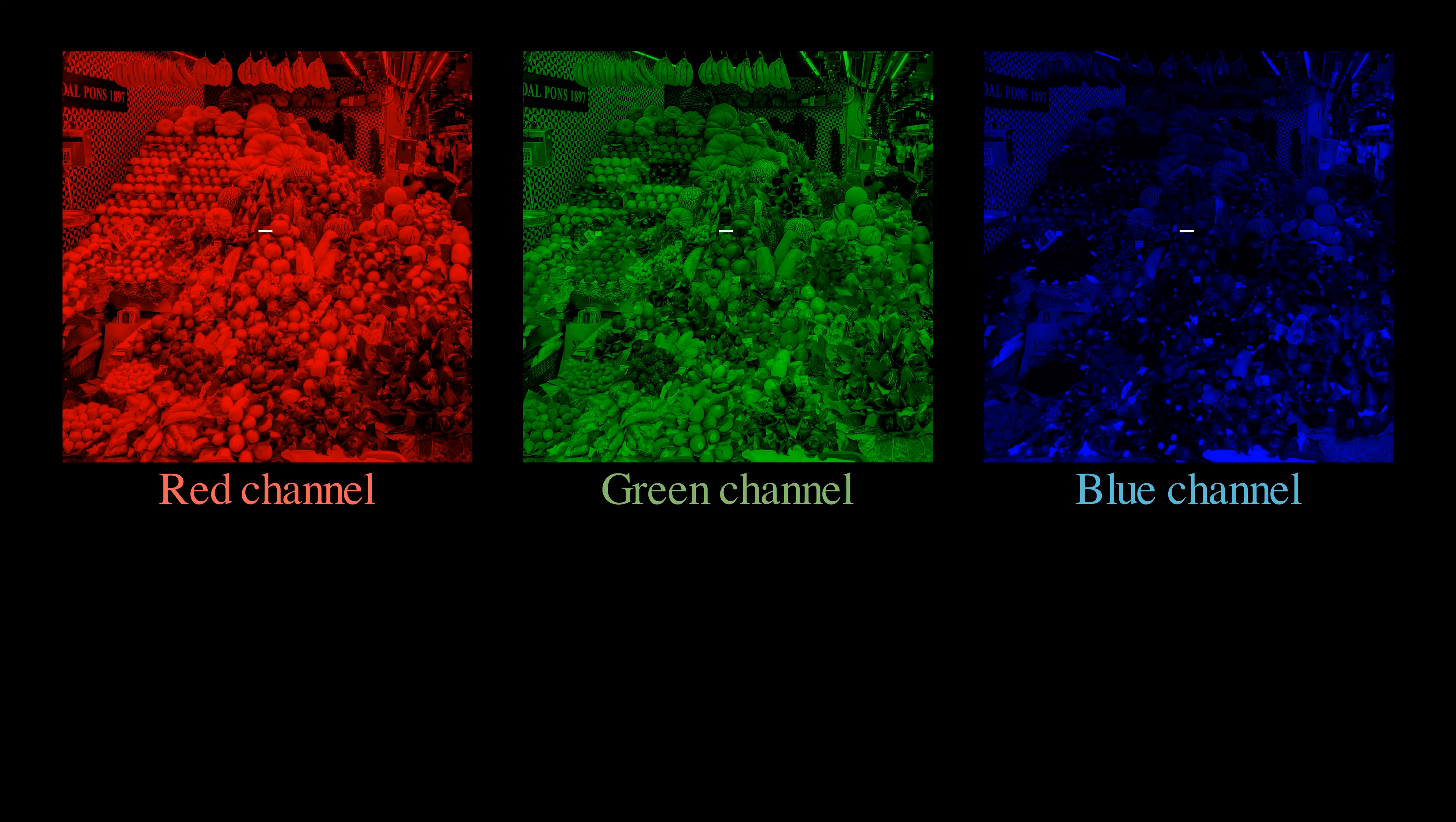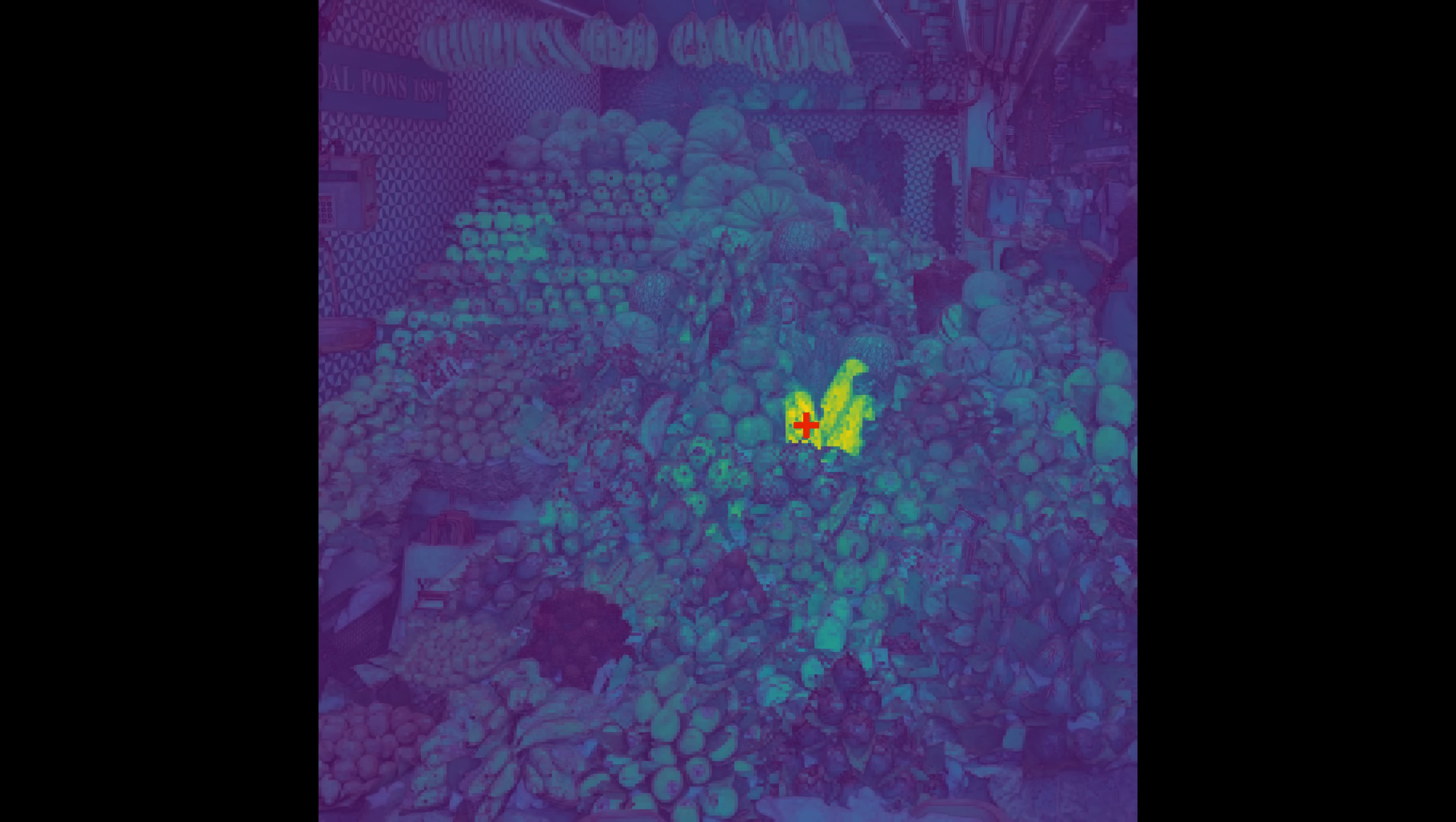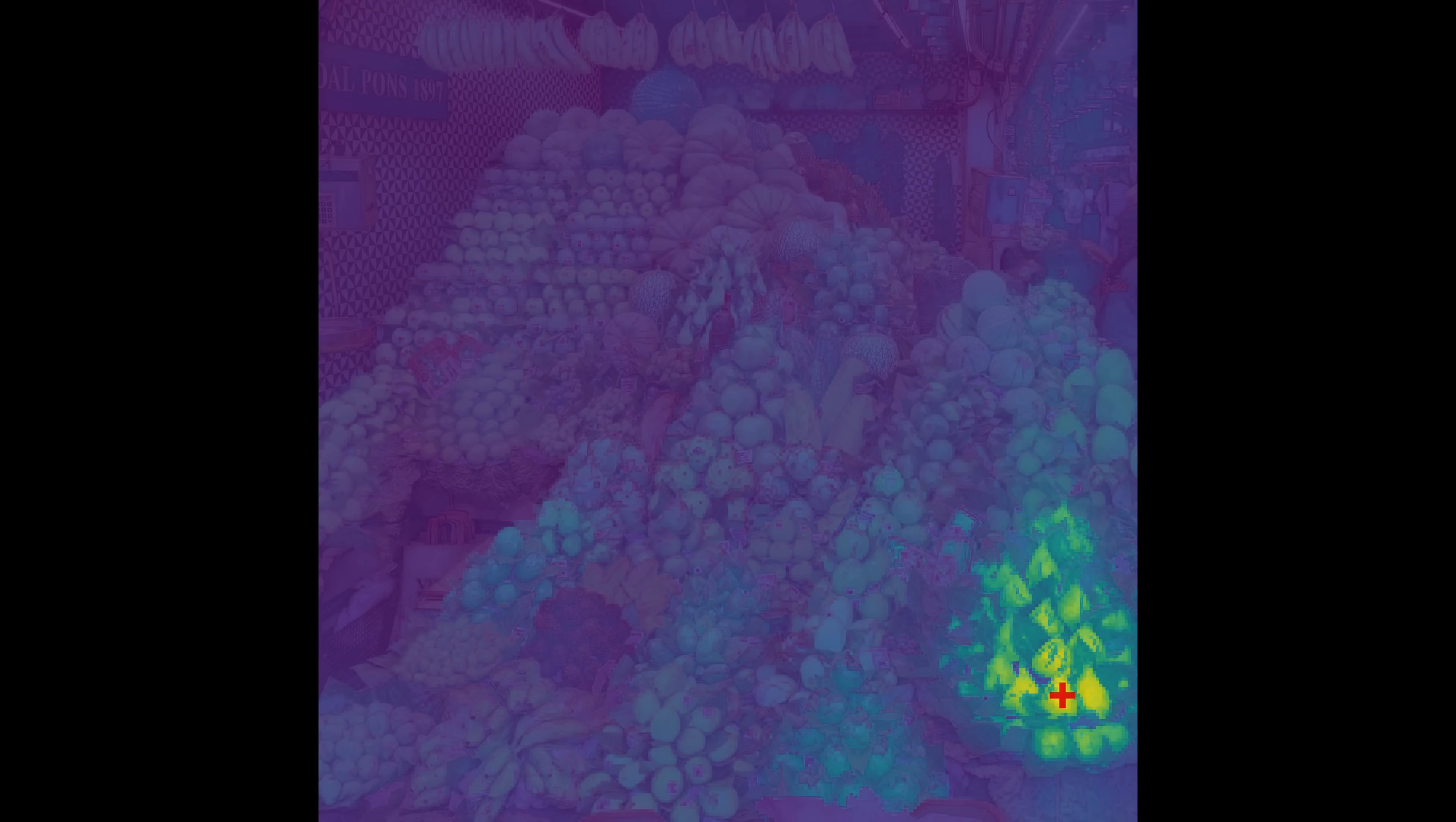For a computer, an image is just a grid of numbers. To make sense of these numbers, AI needs to extract meaningful features from an image. Good features help us identify which regions of the image are similar to the red cross, revealing semantic structures even in a complex cluttered scene.